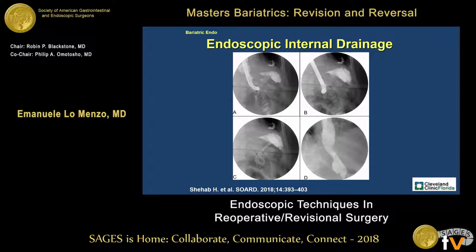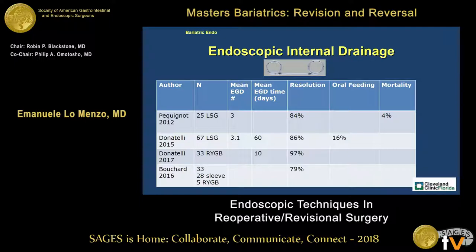It's performed using a guide wire placed into the collection itself. Some debridement can be made — similar to what we do when we use endoscopic drainage of pancreatic pseudocysts — and then we put double pigtail stents in order to keep that tract open and reevaluate over time. This has been described for a while; however, the experience in bariatric surgery is relatively recent and there are very few studies.